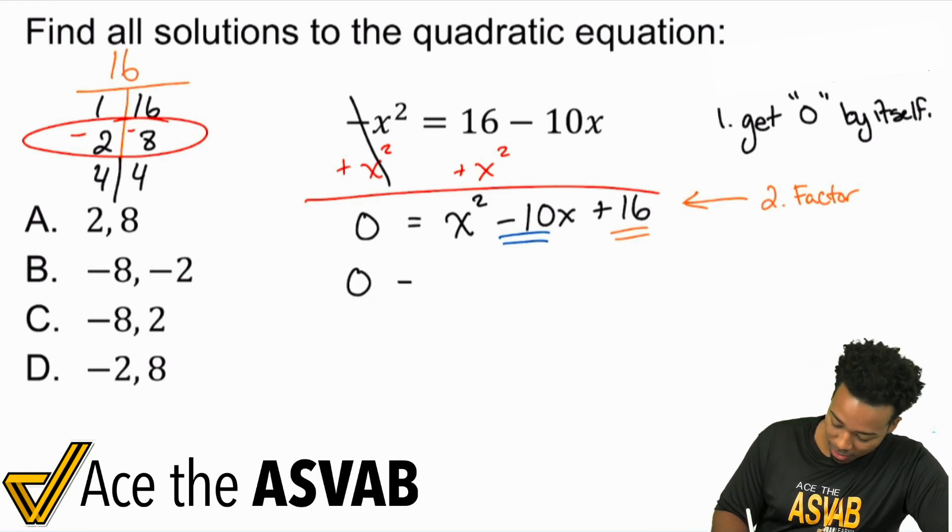And so with that said, what we're going to do here is we have 0 equals, and then we're going to have x minus 2 times x minus 8.